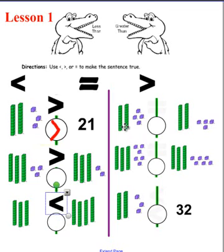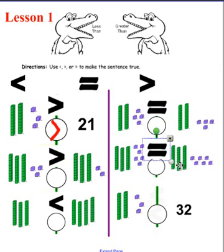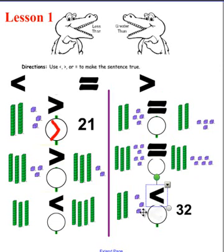We have twenty-four equals twenty-four. Let's see if we have the symbol for equal sign — yours should match mine. And again, we have thirty-six equals thirty-six. Very good. Here we have twenty-three, and here we have thirty-two, so thirty-two is greater than twenty-three. If your answers are correct, that's outstanding.